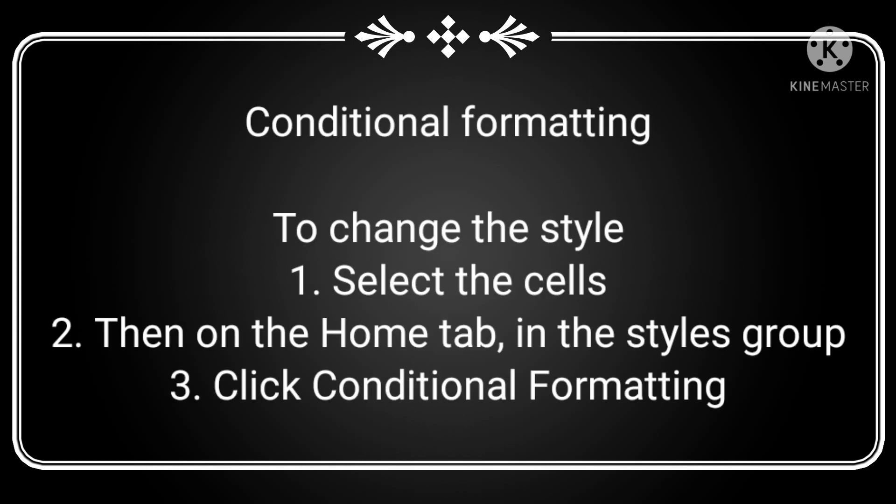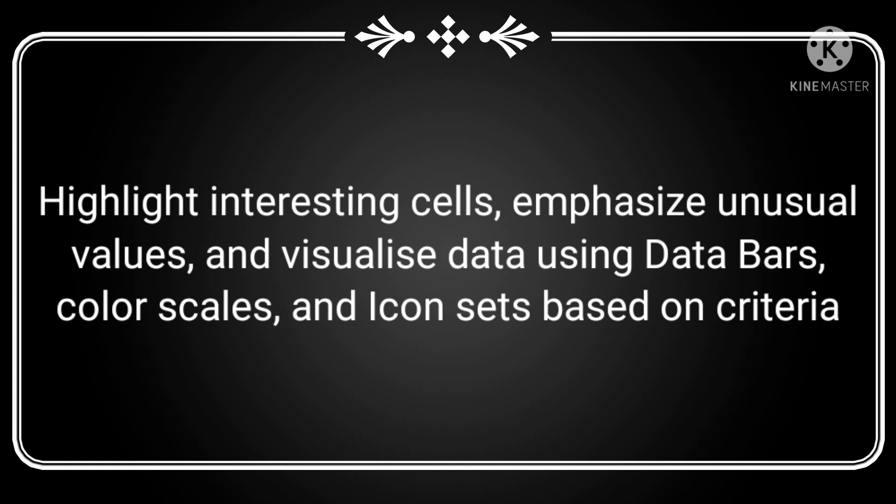Let's talk about the styles group. To change the style, select the cell and then on the Home tab in the Styles group, click on conditional formatting. The styles group is used to highlight interesting cells, emphasize unusual values, and visualize data using data bars, color scales, and icon sets based on criteria.